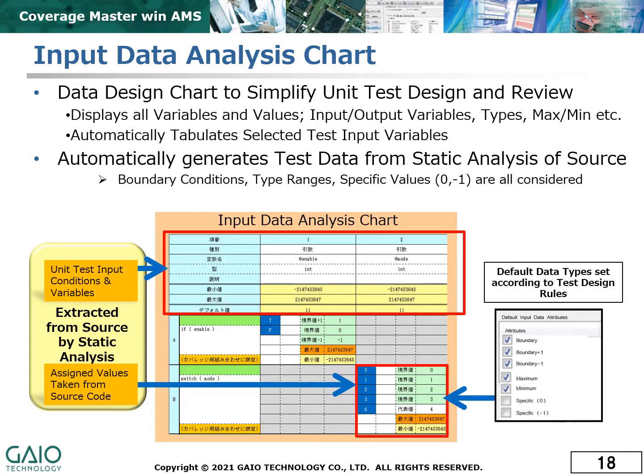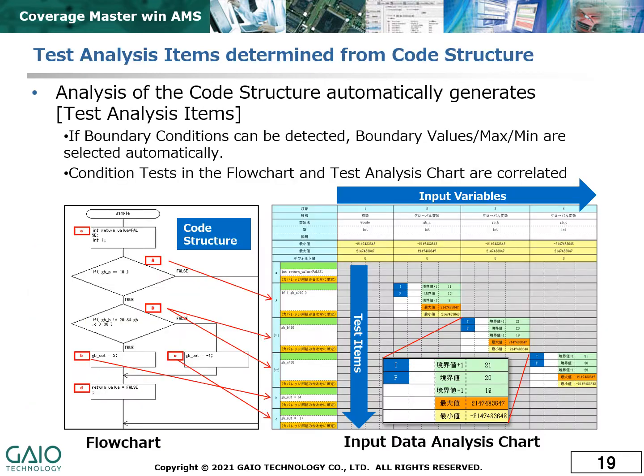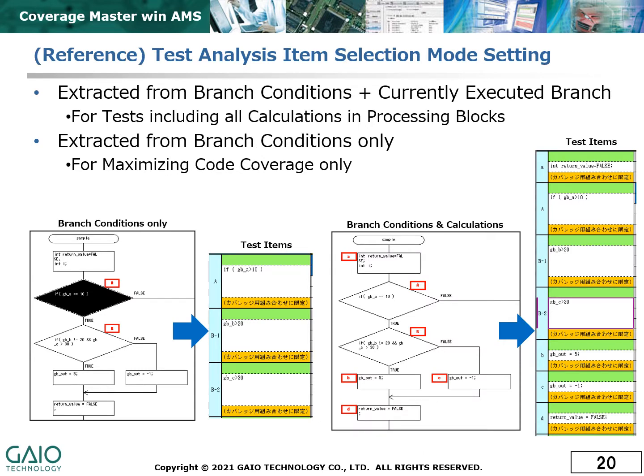The test data analysis editor allows the user to examine the automatically generated test data and modify it to meet the needs of the test. The code structure is analyzed to determine the conditions that control the flow of the software, and tests are added to ensure the greatest possible coverage of all flow paths. One example of the settings available to fine-tune the test data is the selection mode setting, which decides whether calculation results are tested as well as condition results.